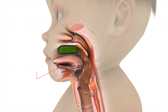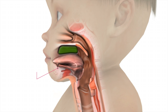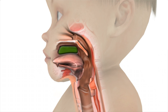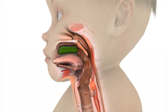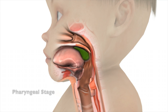When a tongue tie is present, a similar swallowing challenge occurs as the tongue is stuck to the bottom of the mouth, preventing it from elevating up against the hard palate. Release of the tongue tie, if present, allows for greater tongue mobility. If a high palate is present, oral motor tongue exercises can help both strengthen and improve tongue flexibility to compensate for the high palate.